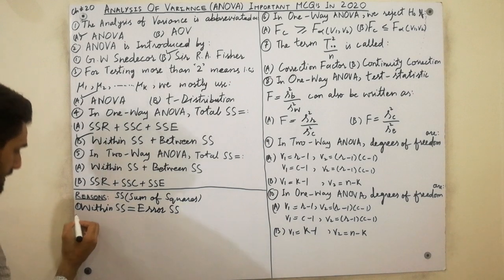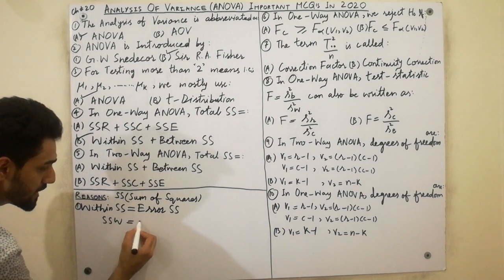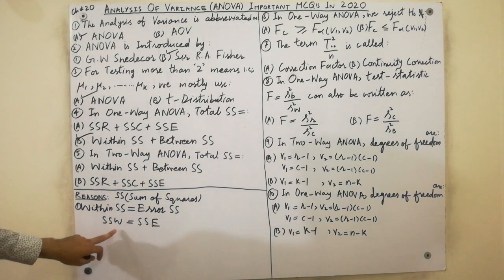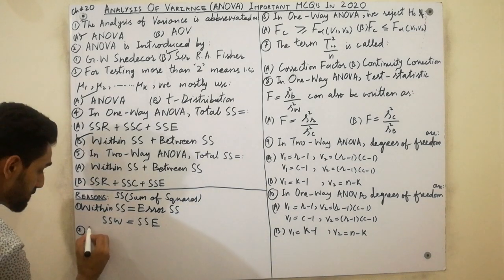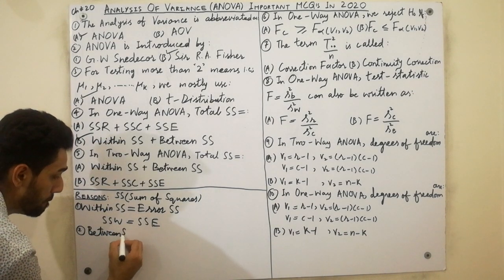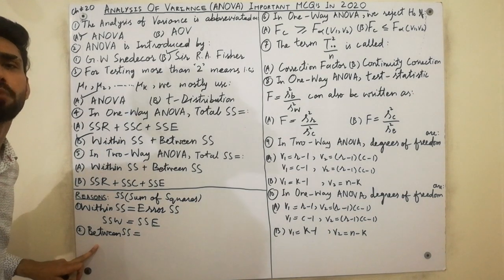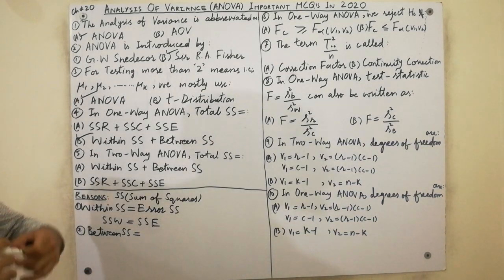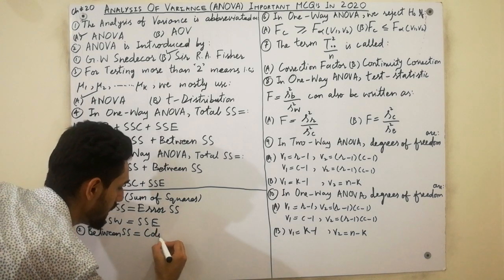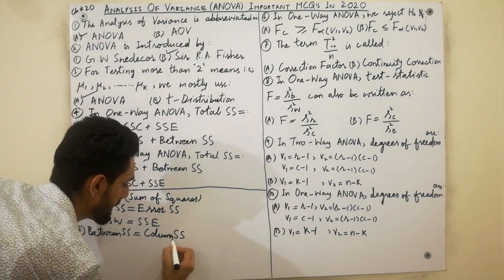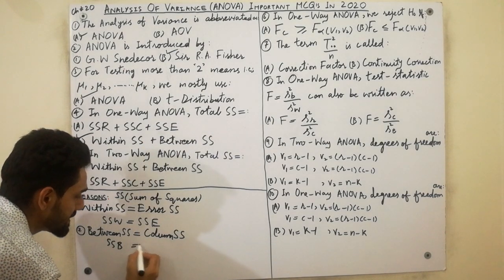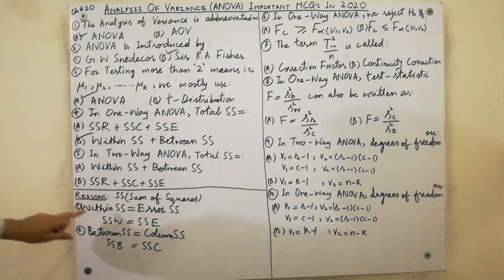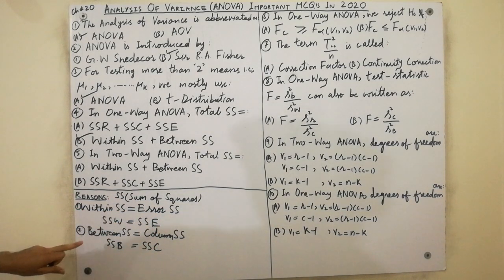Also remember: Between Sum of Squares (SSB) is also called Column Sum of Squares (SSC). So SSB = SSC. To summarize: Within Sum of Squares equals Error Sum of Squares, and Between Sum of Squares equals Column Sum of Squares.